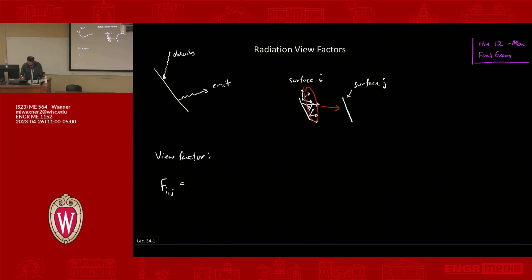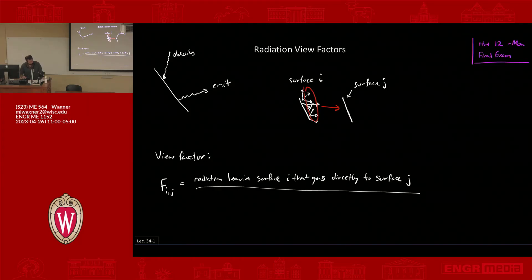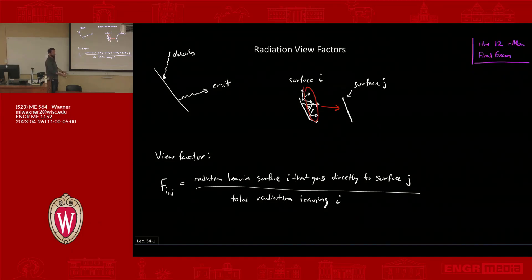Another way of saying that is: the view factor is the fraction of light going from surface i to surface j. In the numerator, it's the radiation leaving surface i that goes directly to surface j, divided by the total radiation leaving surface i. So you emit some amount of radiation, and the view factor is just the fraction that goes to j.